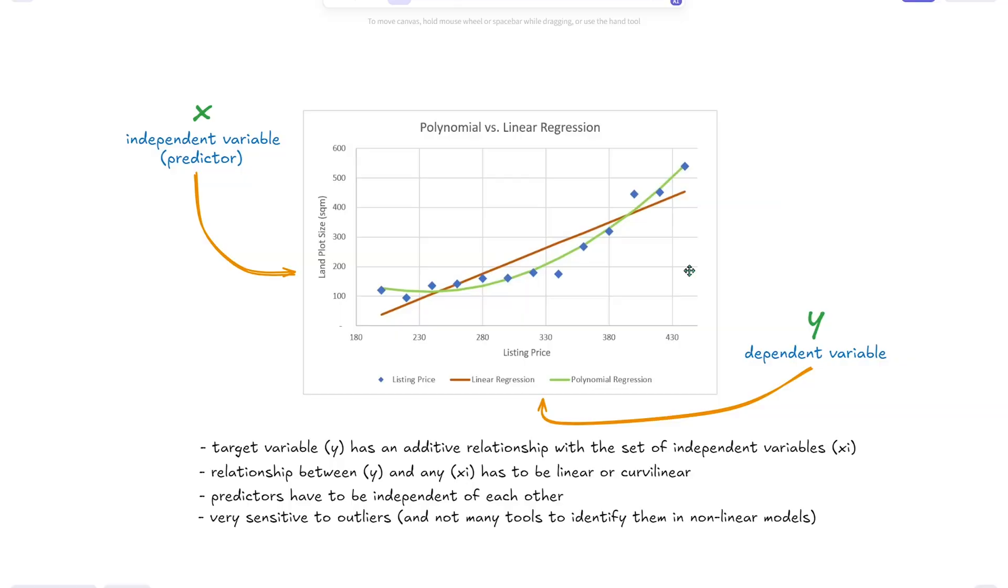Polynomial regression is another version of a regression model that uses polynomial equations to predict the independent variables. We usually use it when the linear regression model is not good enough to predict the way our values are developing between the two variables.